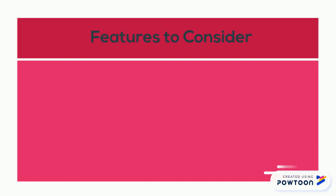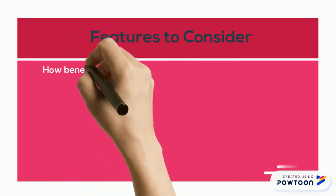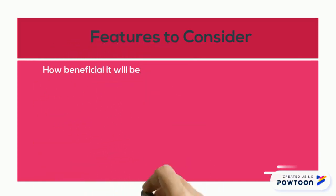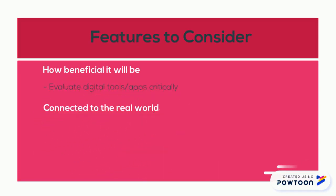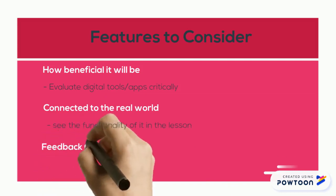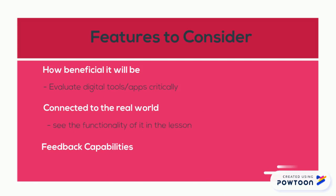When choosing technology to use in your classroom, you need to think about how beneficial it will actually be, so make sure to evaluate the tools and apps critically. You need to see whether it is connected to the real world so your students can see the functionality of using it in the lesson, and you also need to look into its feedback capabilities, as for certain tools and apps this could be essential so your students can see how to improve in their learning.